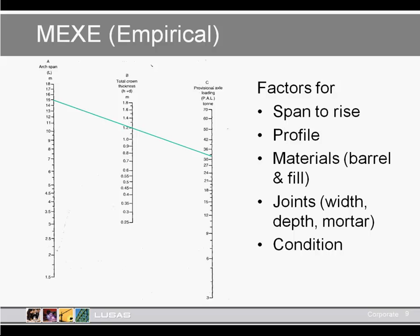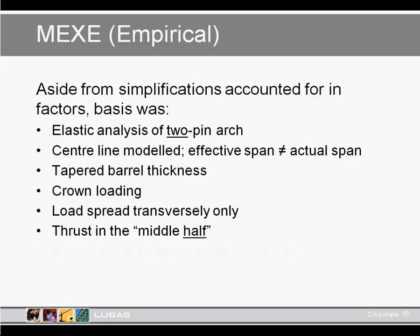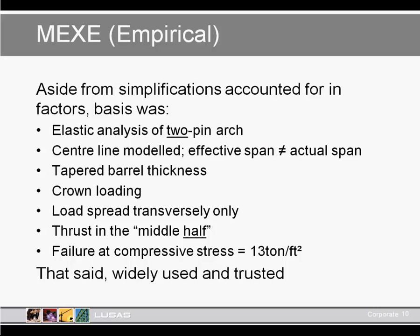MEXE is based on an elastic analysis. The centre line is modelled, but typically the effective span isn't equal to the actual span. Tapered barrel thickness is assumed. This approach also tends to look at crown loading, whereas we know that quarter-point loading is the worse condition for these types of structures. Thrust is typically assumed to be in the middle half of the structure. That said, it is a widely used and trusted process — it works.